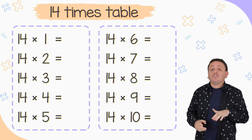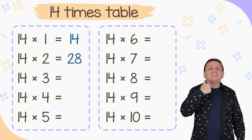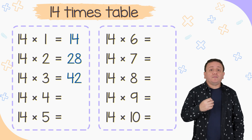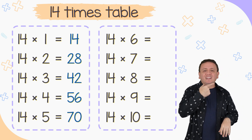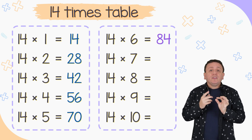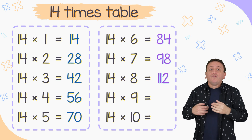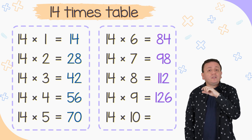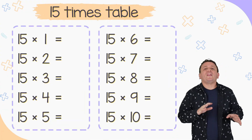The 14 times table. 14 times 1 equals 14. And 14 times 2 equals 28. The next one: 14 times 3 equals 42. 14 times 4 equals 56. 14 times 5 equals 70. Let's jump to the next column. 14 times 6 is equal to 84. And 14 times 7 equals 98. 14 times 8 equals 112. 14 times 9 equals 126. What about 14 times 10? 14 times 10 equals 140.